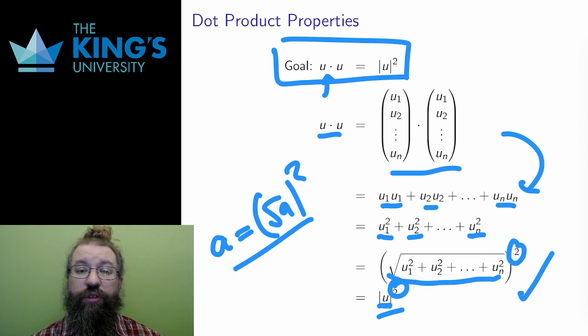Notice in these proofs how I rely on definitions. When I need to know about the length or the dot product, I often go back to the definitions and use them explicitly. You should expect to do this in your proofs. Definitions are very valuable and useful.